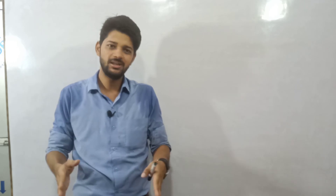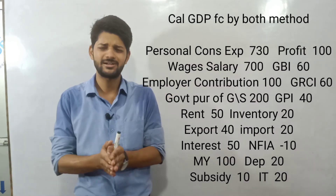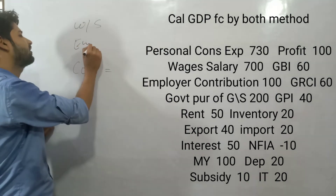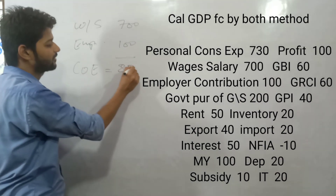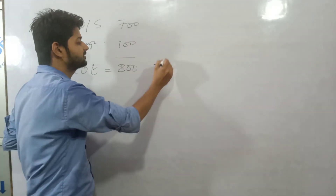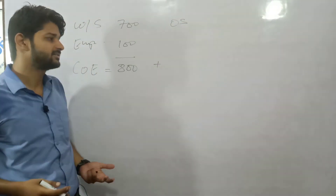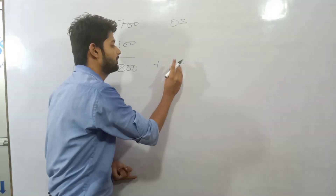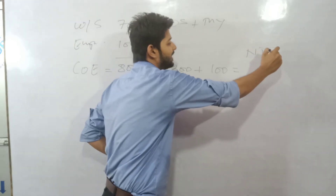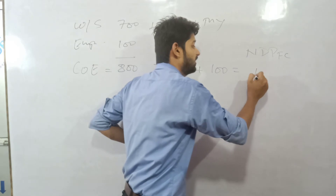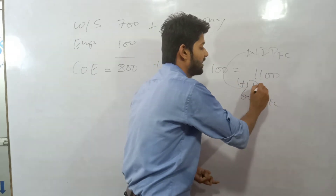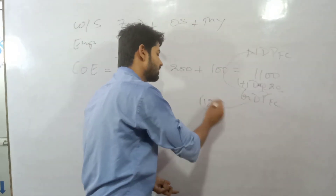Question 4: find GDP at FC using income and expenditure methods. Income method: wages and salary is 700, employer contribution to social security is 100, so compensation of employee is 800. Operating surplus — rent 50, interest 50, profit 100 — total 200. Mixed income is 100. NDP at FC equals 1100. Adding depreciation of 20 gives GDP at factor cost equal to 1120.